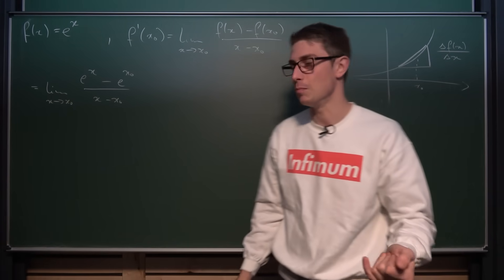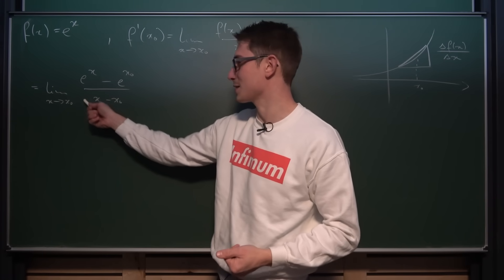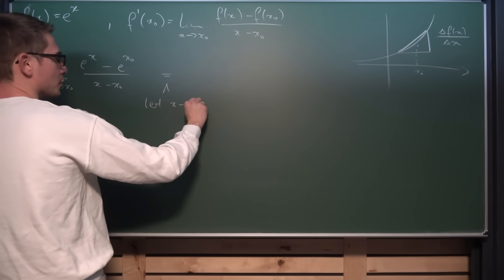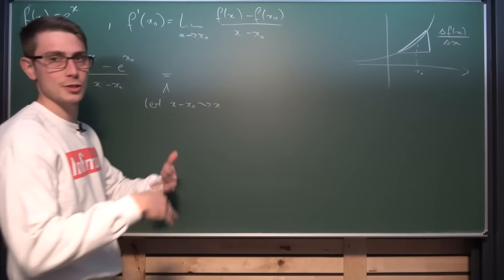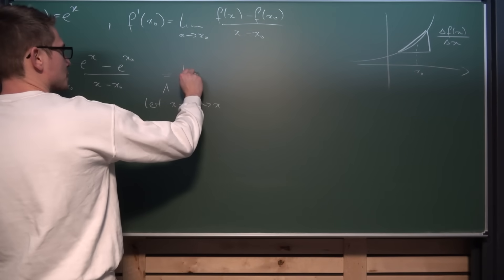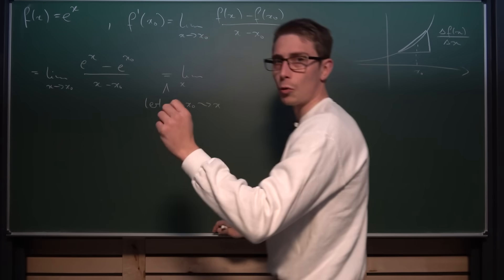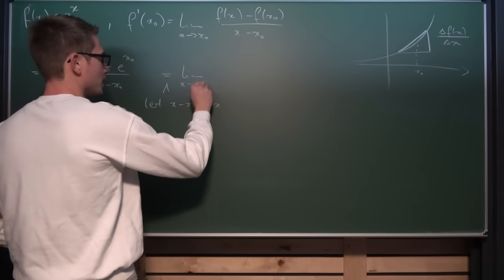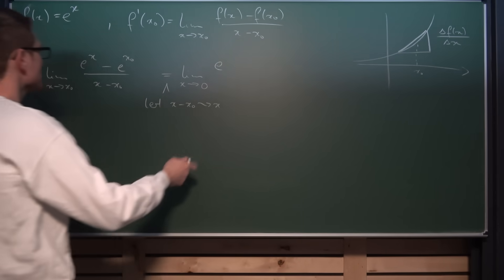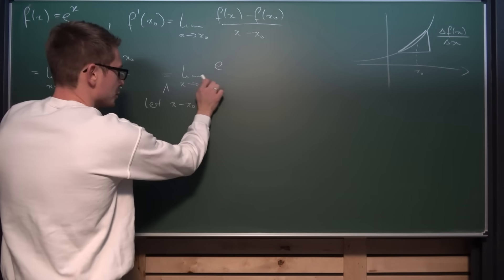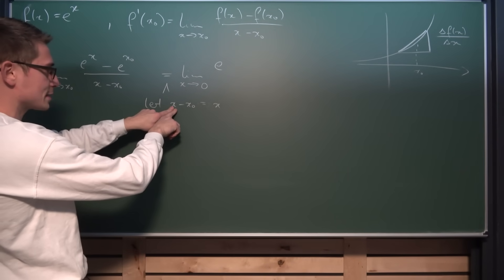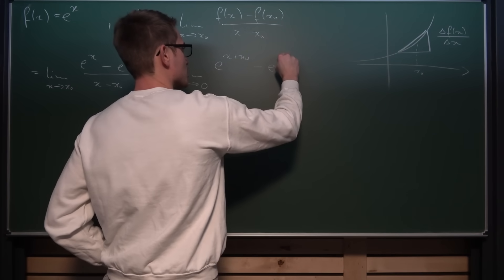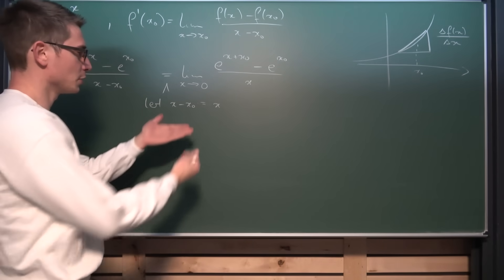Most people prefer the h-method, where you introduce a substitution. We give x minus x0 a new name — let x minus x0 equal a new variable, most people call it h. This gives us the limit as our new variable approaches 0 of e^(x+x0) minus e^(x0), all divided by the new variable x (or h). This is the so-called h-method or second formulation of the difference quotient, written as the limit as h goes to 0 of f(x0+h) minus f(x0) divided by h.